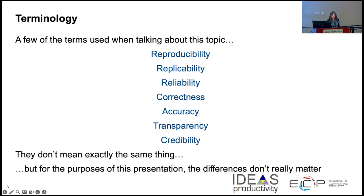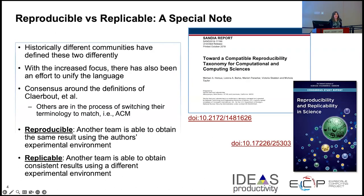We'll talk about some of them. The biggest definition we need to look at is the difference between reproducible and replicable — different organizations have used these differently, but there's becoming more of a consensus. Reproducible is when another team can obtain the same results using the same environment for the experiments.